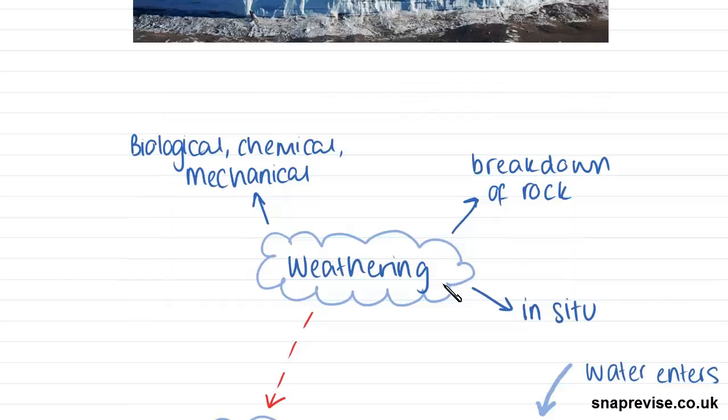Weathering is one of these processes that is shaping glacial landscapes and it can be defined as the breakdown or decay of rock at or near the earth surface and this creates material that remains in situ which means simply staying in the same place.